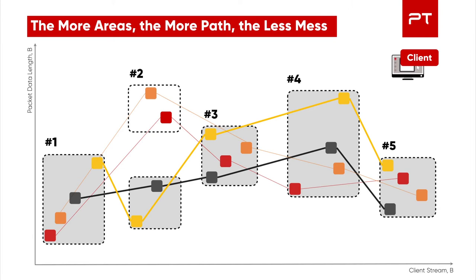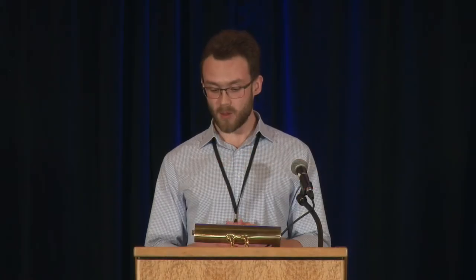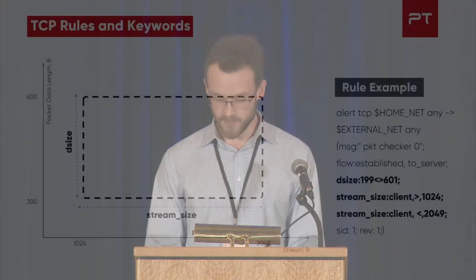Let's assume we need to detect packet number 2 in different samples and its size is either 100 plus or minus 20 bytes, or 300 plus or minus 20 bytes. In this case, it makes sense to create two separate areas instead of one large one, and detection will follow one of these two paths. Now let's consider what tools Suricata gives us to define such areas in rules. We will need two keywords: dsize and stream_size. If we are looking for a packet from 200 to 600 bytes, located somewhere between the 1024th and 2048th byte of the stream, the rule will look like this. The dsize keyword sets a range of packet length values, and the stream_size is set with two keywords limiting the packet position in the stream from the left and from the right.